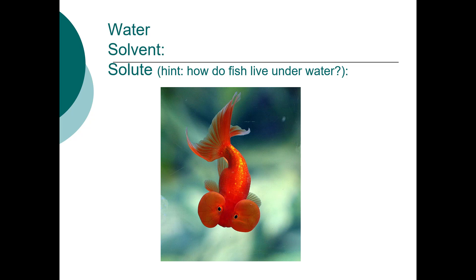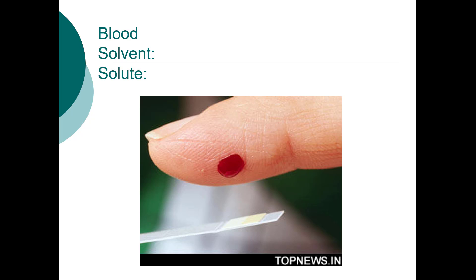For blood, the solvent is water — water is what you're mostly made of. Solutes dissolved in your blood include salts, blood sugar, and urea. Cells are not solutes because they aren't actually dissolved in the solution; they're just present in it.